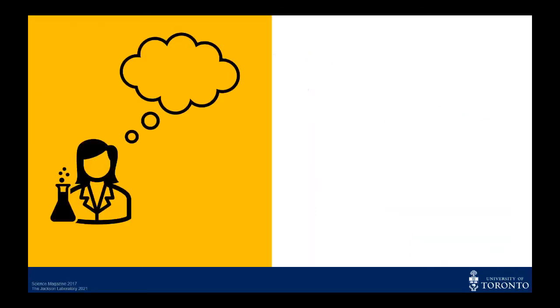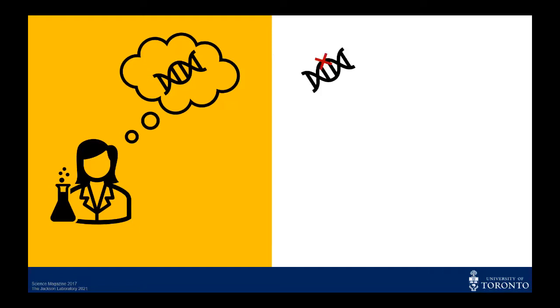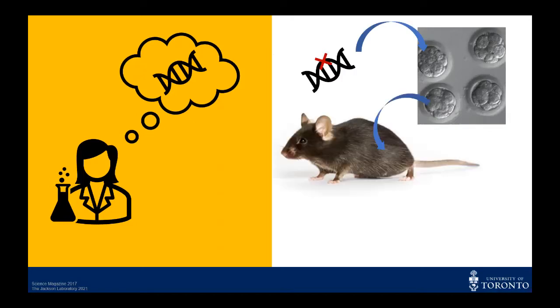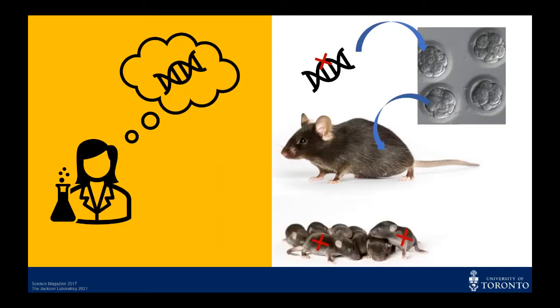As scientists, sometimes we wonder, what does each gene do? In order to find out, many scientists use what we call transgenic mice. We can delete the gene we are interested in mice and see what happens. To do this, we can use special methods to delete the gene in mouse cells or embryos, and then put them into a female mouse, and this mouse will then give birth to some baby mice that have the gene deleted. To check which mice have the gene deleted, we do a test called genotyping.